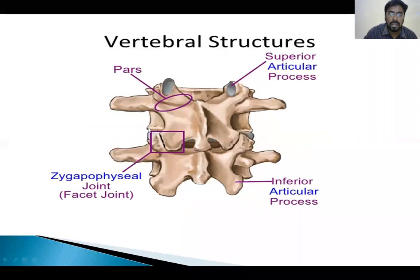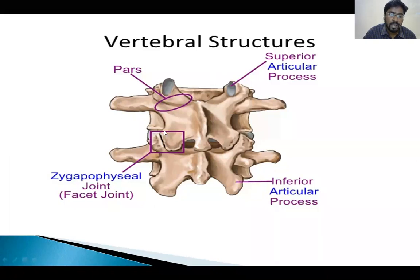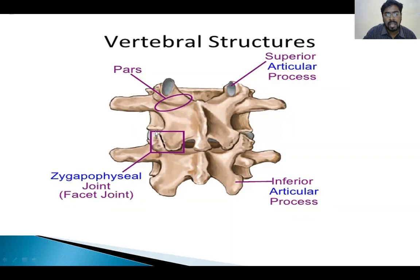This is the posterior view of the vertebra. These are the four articular processes. There are a total of seven processes in each vertebra. When there is fusion of adjacent vertebrae at the articular processes, we call it a zygapophysial joint or facet joint. It is a synovial joint where the articular surface is covered with cartilage, making it more prone to degeneration.